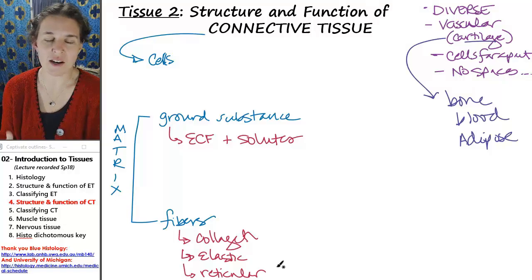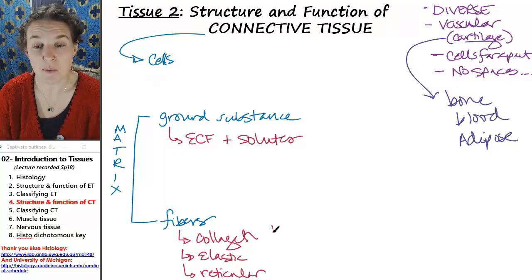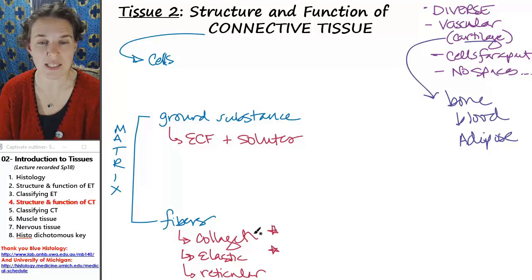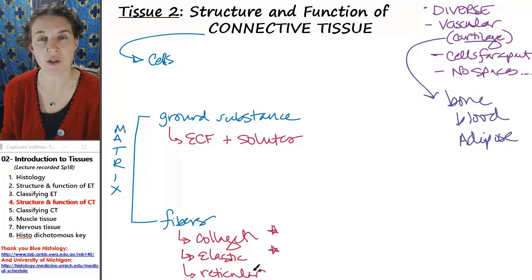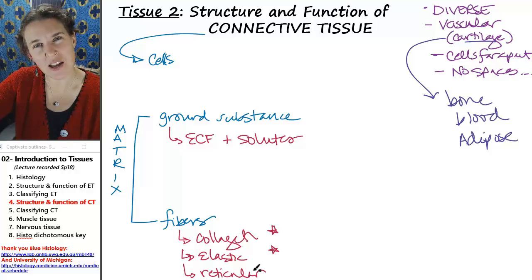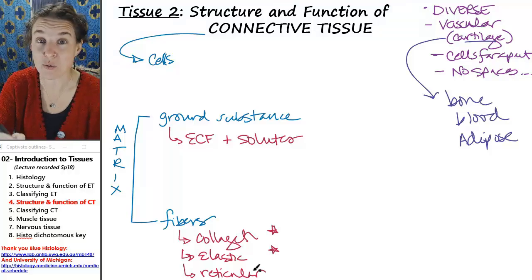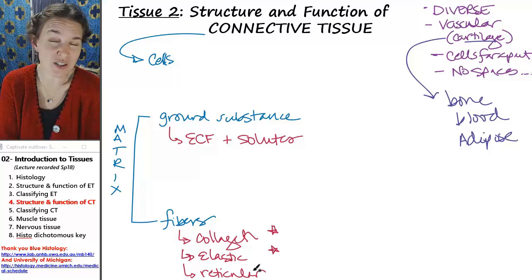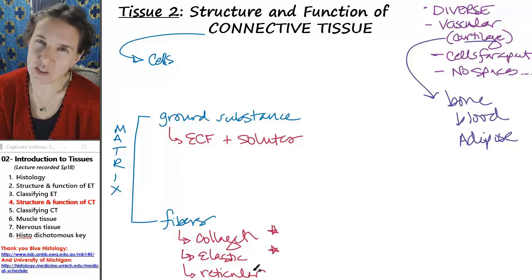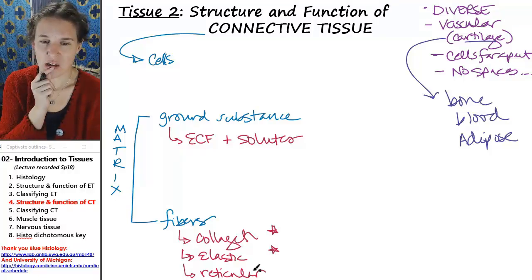And then there's also these fibers called reticular fibers. Reticular fibers are just another kind of fiber. The fibers that we're going to see today in our studies, we're going to see collagen fibers and elastic fibers. And being able to identify the fibers will help you distinguish between different kinds of connective tissues and other things that might look like connective tissues but actually aren't.